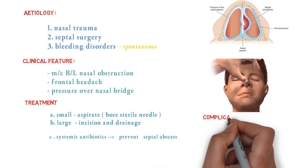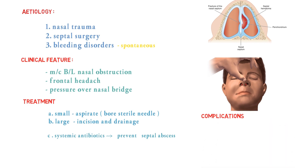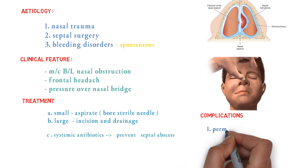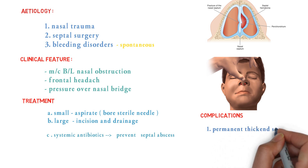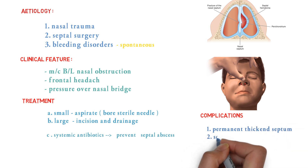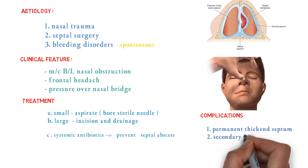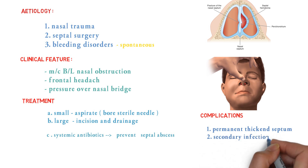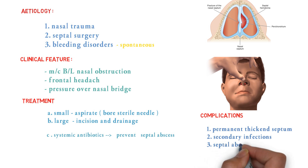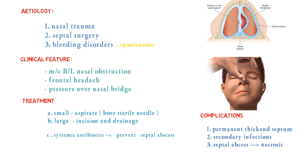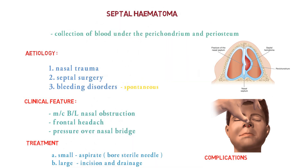Systemic antibiotics prevent septal abscess, which is a complication of septal hematoma. The complications include permanent thickening of the septum, secondary infection leading to septal abscess, necrosis of cartilage, and depression of the nasal dorsum.